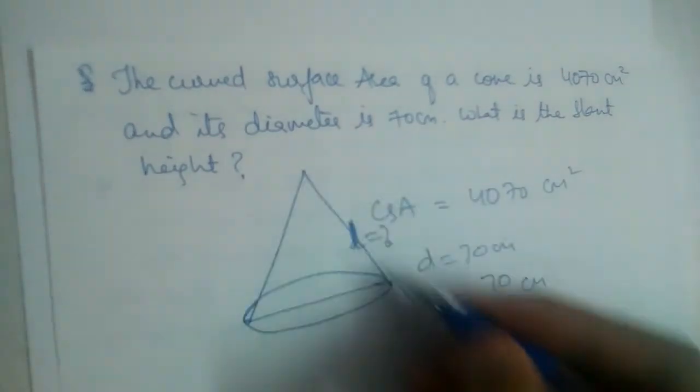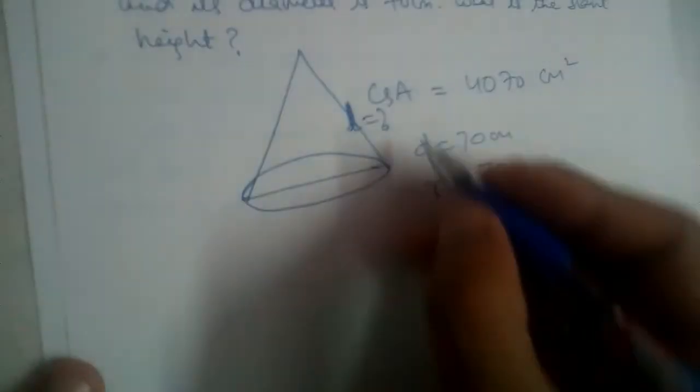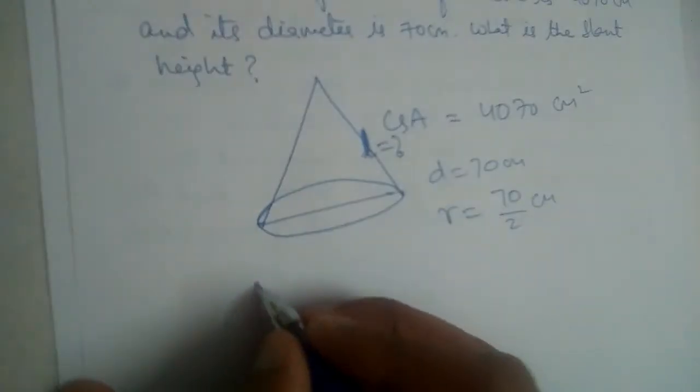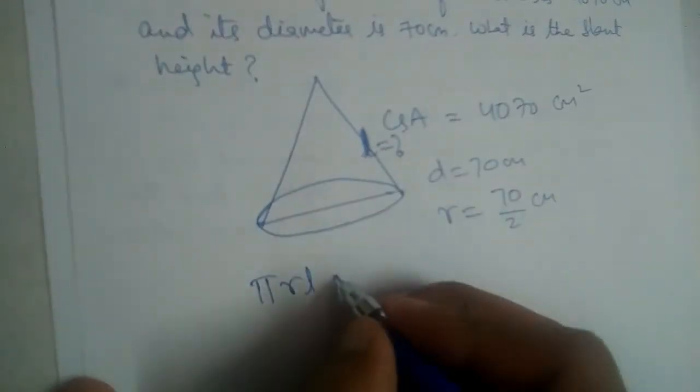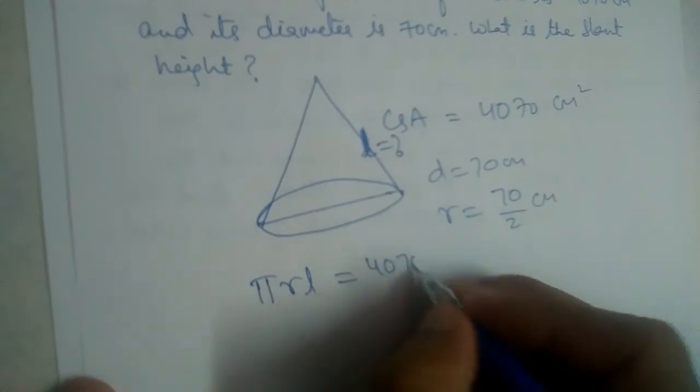This is the slant height. We know the curved surface area of a cone is πrl, so given πrl = 4070.